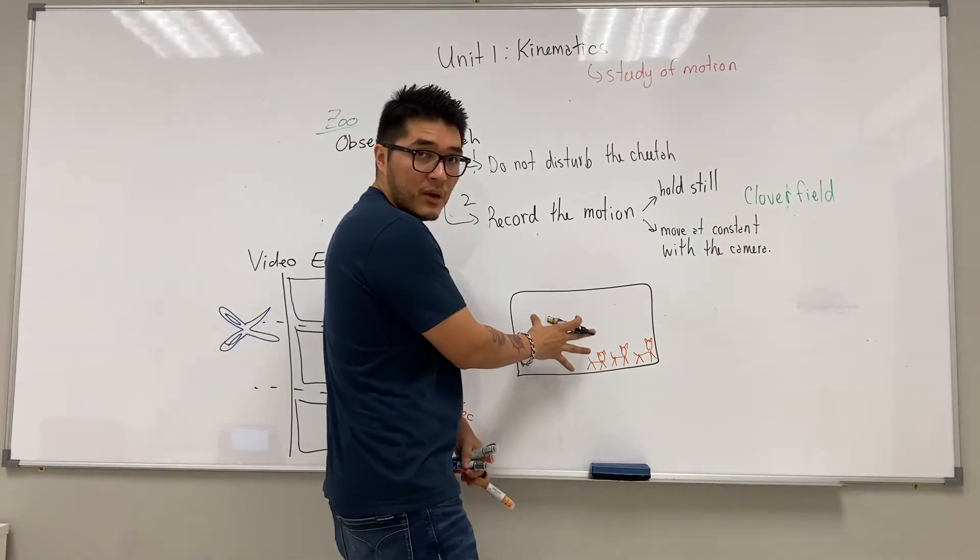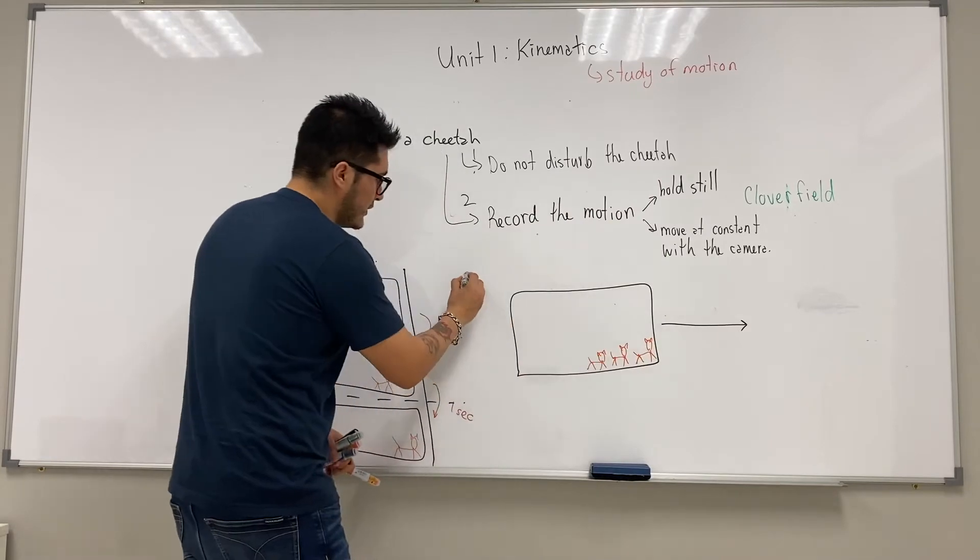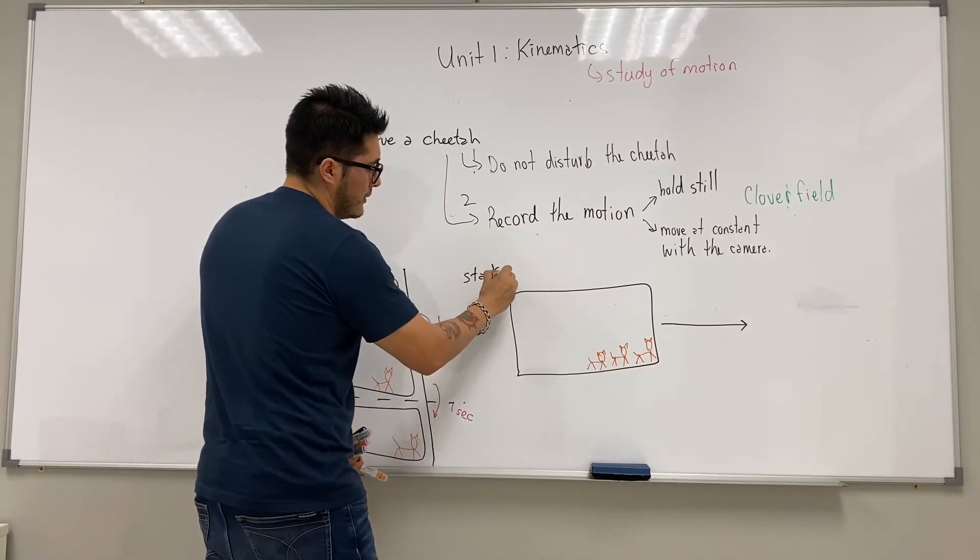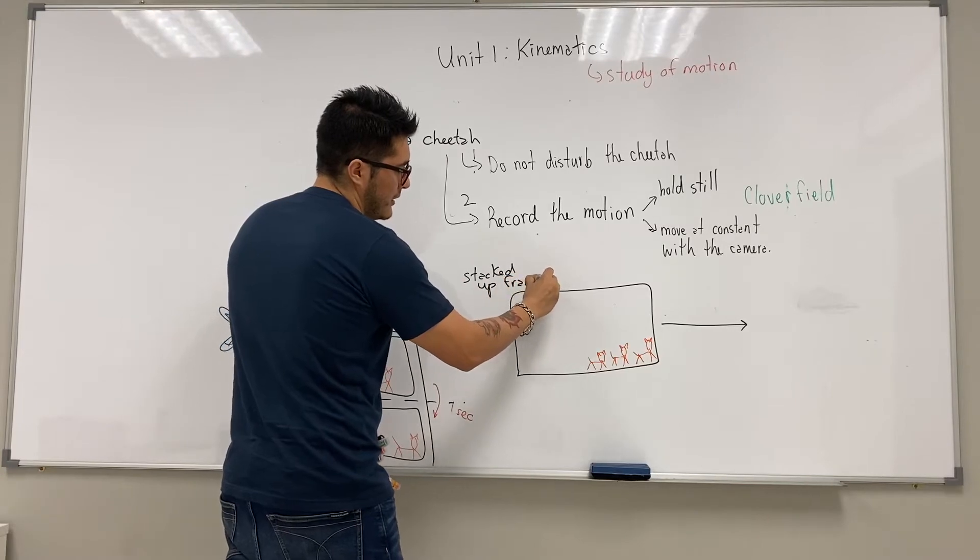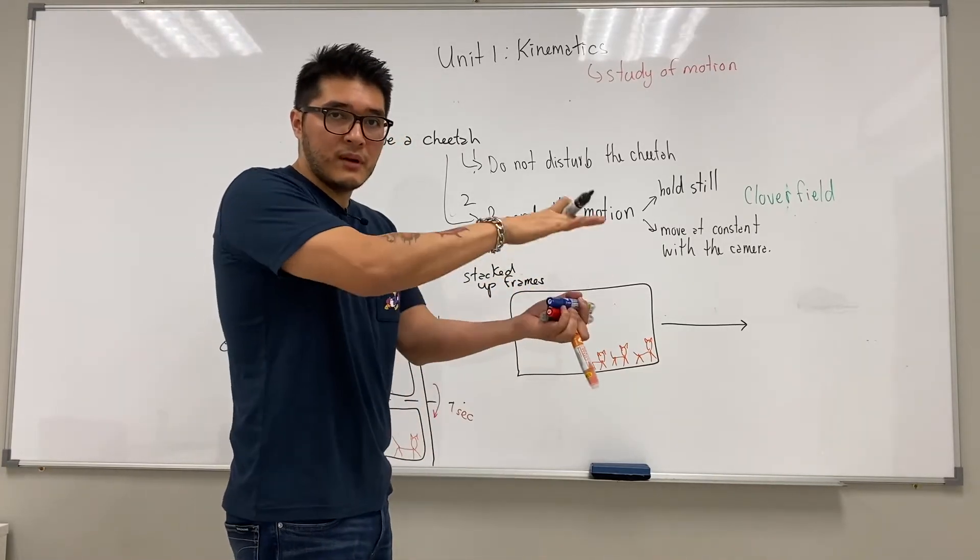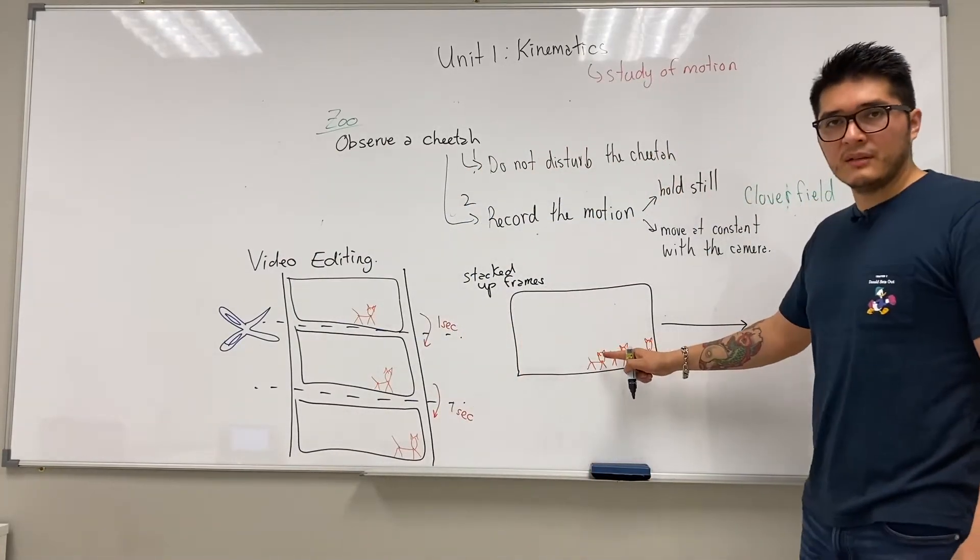So once we stack up all the frames together—stacked frames, in other words, piled on top of one another—what we're going to do is just replace the cheetah by a dot.